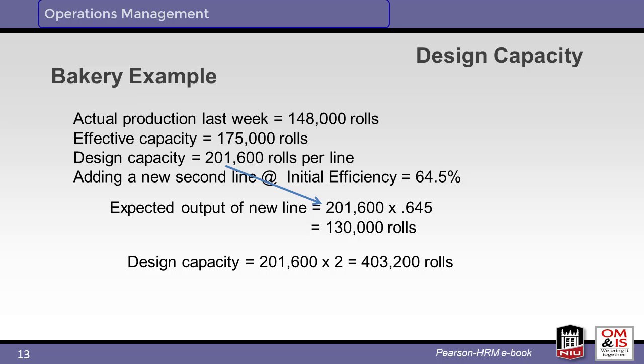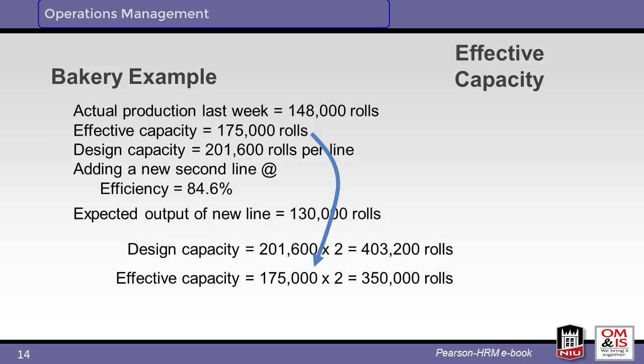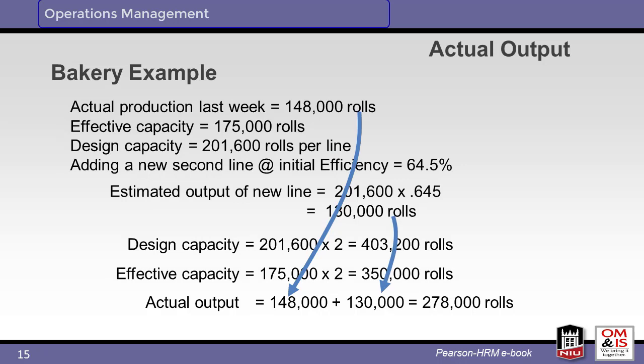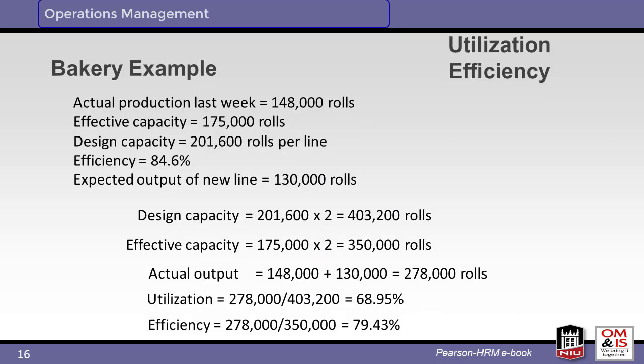Let's look at the impact of adding a second production line to the bakery. Since this is a new installation, it's not unusual to have reduced efficiency at the start. The team has estimated this efficiency to be 64.5%. With this added line, total design capacity is 403,200 rolls per week, and effective capacity is 350,000 rolls per week. With reduced efficiency on the second line, actual output is 148,000 for the original line and 130,000 for the new line, totaling 278,000 rolls per week. Note the reduced utilization and efficiency due to the initial startup of the added line.